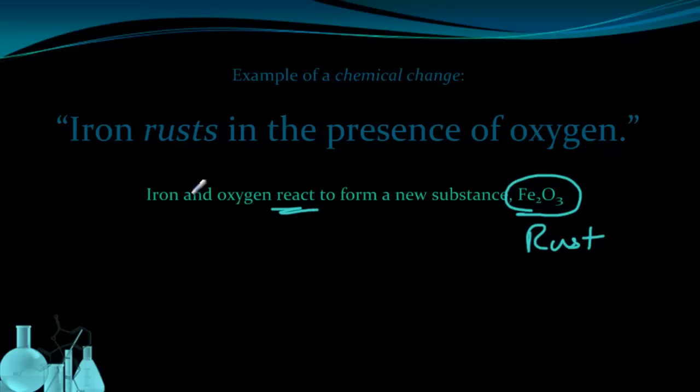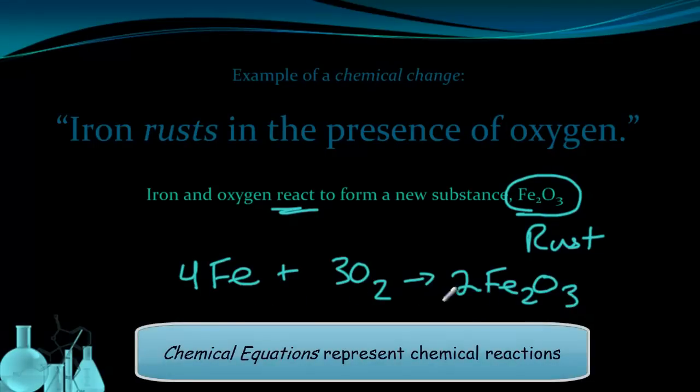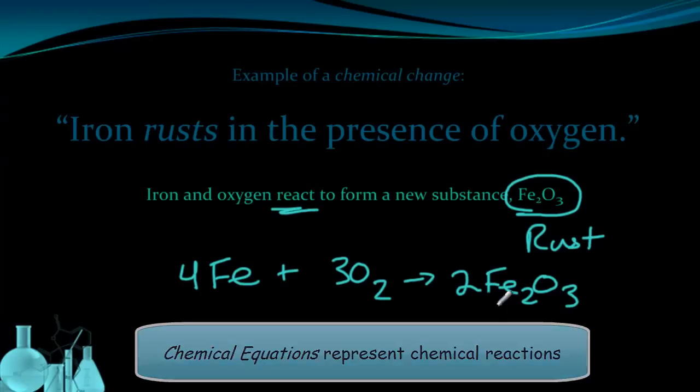So this reaction of iron and oxygen we can actually represent with a chemical equation. As it turns out, if we take four atoms of iron and three molecules of oxygen, they combine to form two molecules of rust. This is a chemical equation. It tells us what we start with and what we end with.